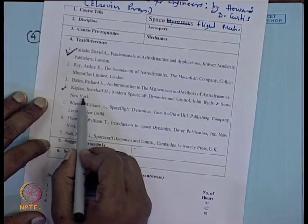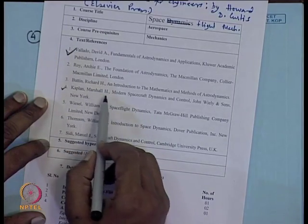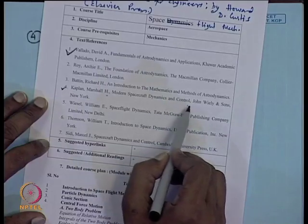In our space flight mechanics, we also deal with satellite attitude dynamics — we consider the satellite as a rigid body or a flexible body. Once it is moving in space and we want to change the orientation of the spacecraft, we have to apply controls. We look into attitude dynamics and control. For those issues, the fourth book is by Marshall H. Kaplan: 'Modern Spacecraft Dynamics and Control.'